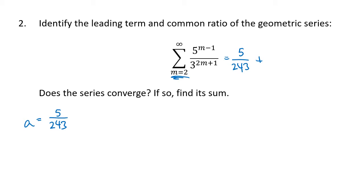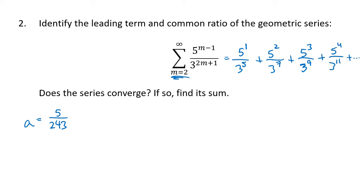To figure out whether the series converges, I need to figure out r. I'll rewrite these terms with exponential notation. The first term is 5 to the 1st over 3 to the 5th. When m equals 3, the top becomes 5 squared and the bottom becomes 3 to the 7th. The next term is 5 cubed over 3 to the 9th, then 5 to the 4th over 3 to the 11th, and so on. The 5 exponent goes up by 1 each time, but the 3 exponent goes up by 2 each time. So the common ratio is 5 to the 1st divided by 3 squared, also known as 5 ninths.